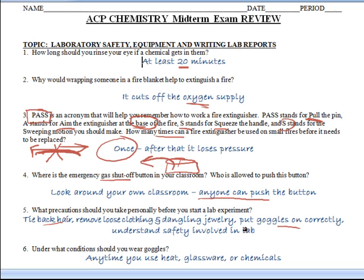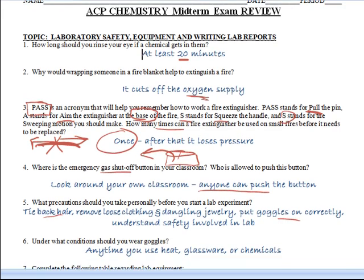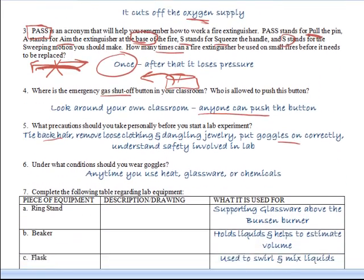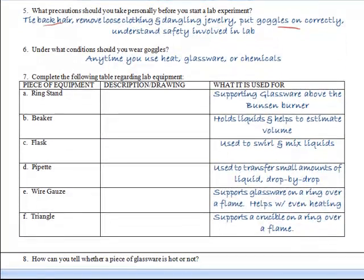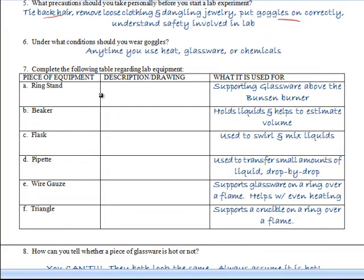Number six. Under what conditions should you wear goggles? All the time. Any time that you have heat, glassware, chemicals, anything like that, you should have goggles on your eyes. Now, in the beginning of the year, we started off looking at different types of equipment. I'm not going to show you here, but you can always go back into your notes and look at what a ring stand looks like, what a beaker looks like, and so forth.